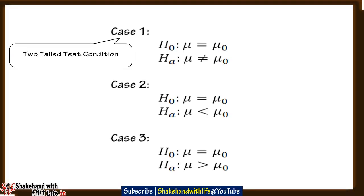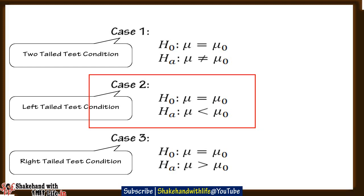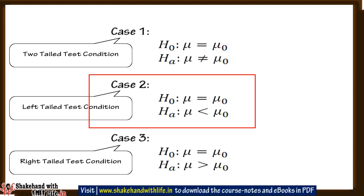Case two: when H naught is stated as mu equal to mu naught, and H-a is stated as mu less than mu naught. Case three: when H naught is stated as mu equal to mu naught, and H-a is stated as mu greater than mu naught. In case one we use two tail test. In my previous video we studied the two tail test condition in detail.